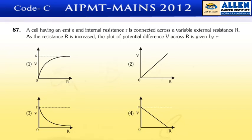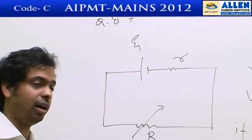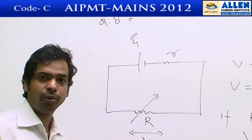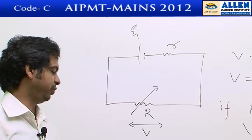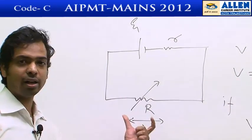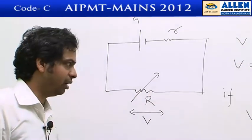Yes, now we are taking question number 87. In this question, a cell with internal resistance r is connected with a variable resistance R, and we are to plot a graph for voltage across R versus R itself.